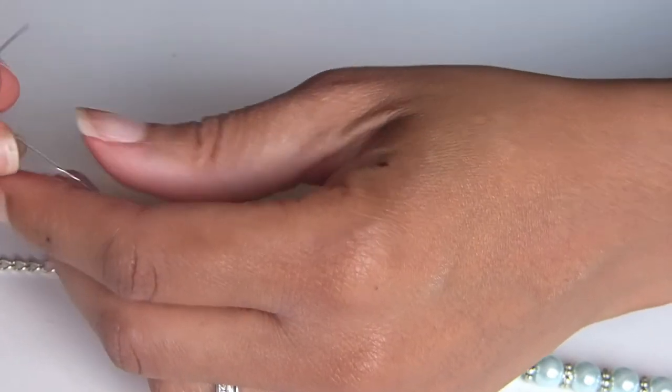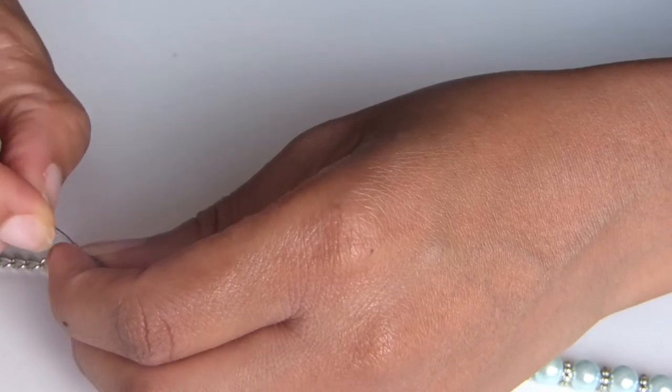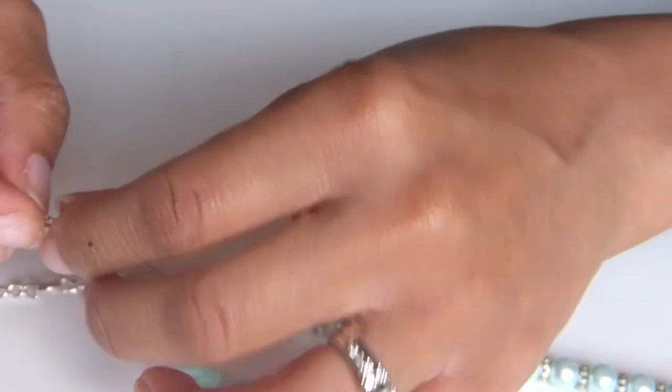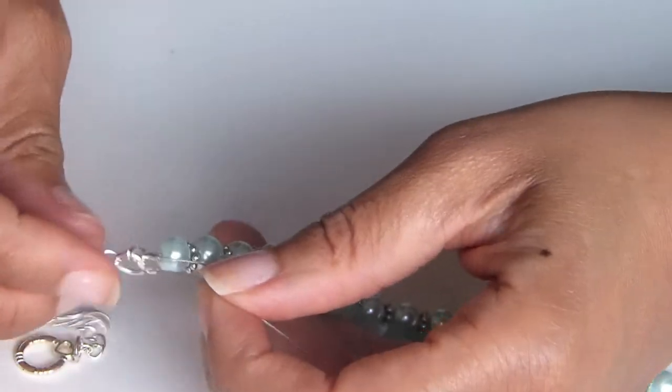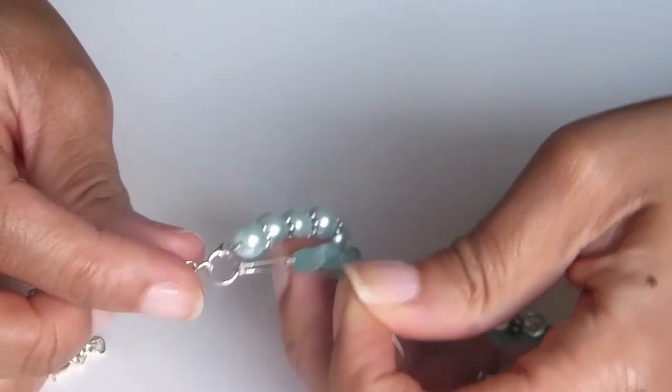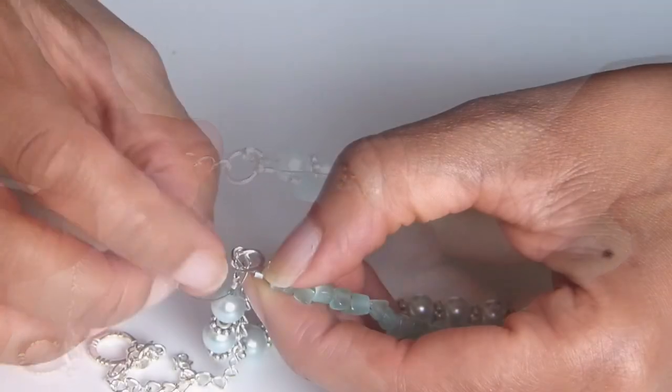You're going to start with a crimp bead and then you're going to move on to your wire protector like we did in the beginning. Carry that through and pull it as taut as you can. Then once you have that, you're going to take the remaining portion of this wire and pull it so you get it all the way to the crimp bead.